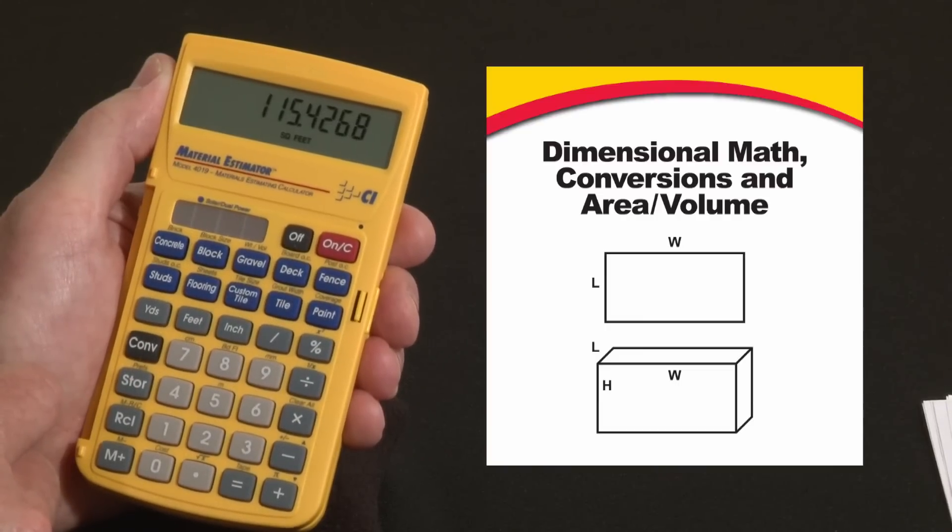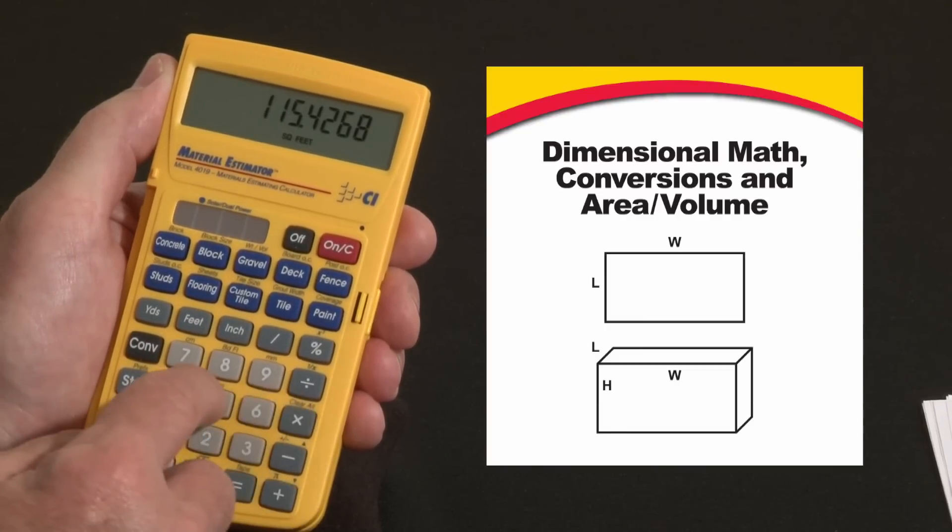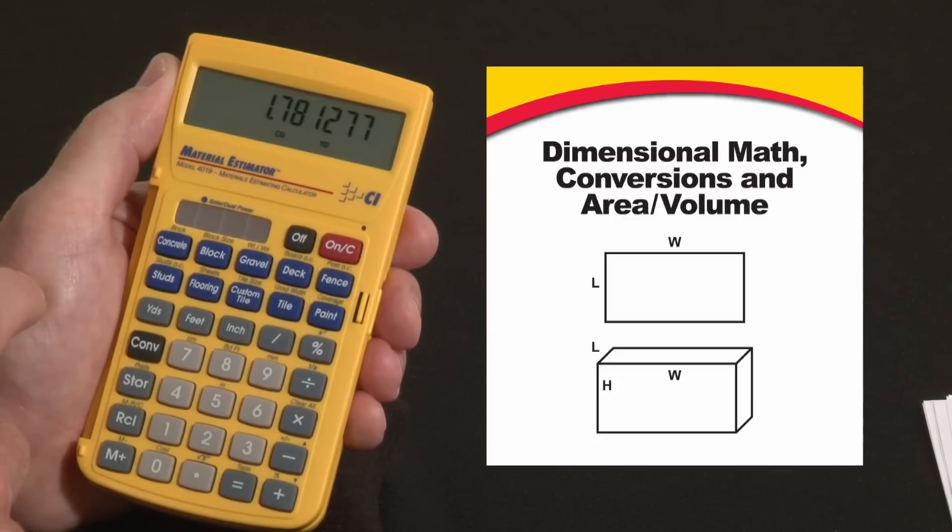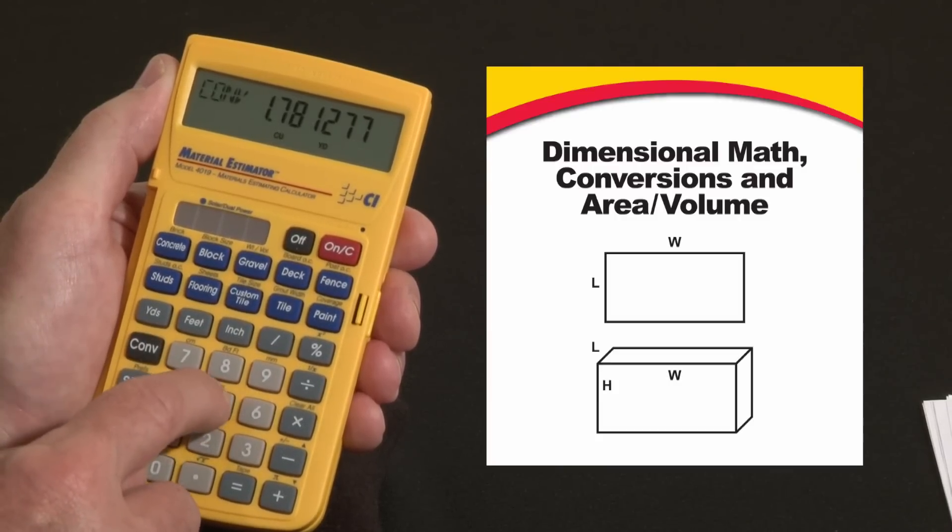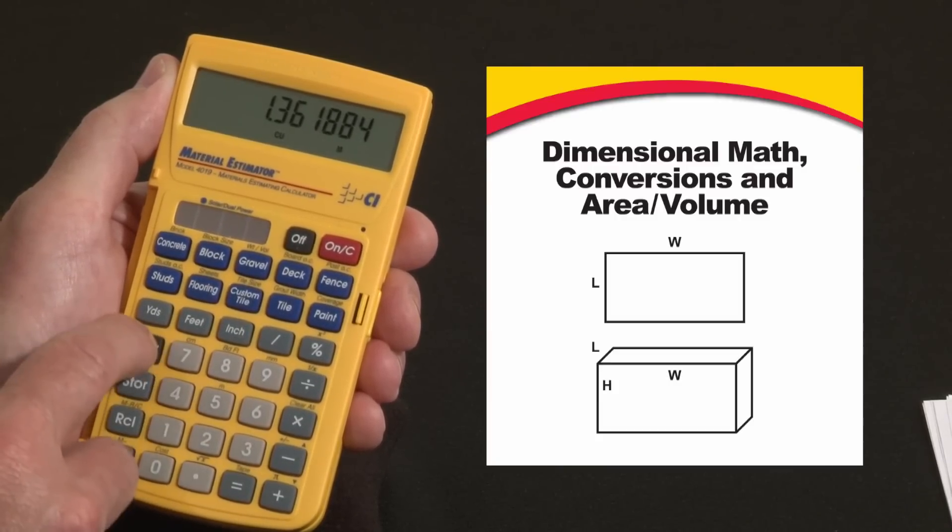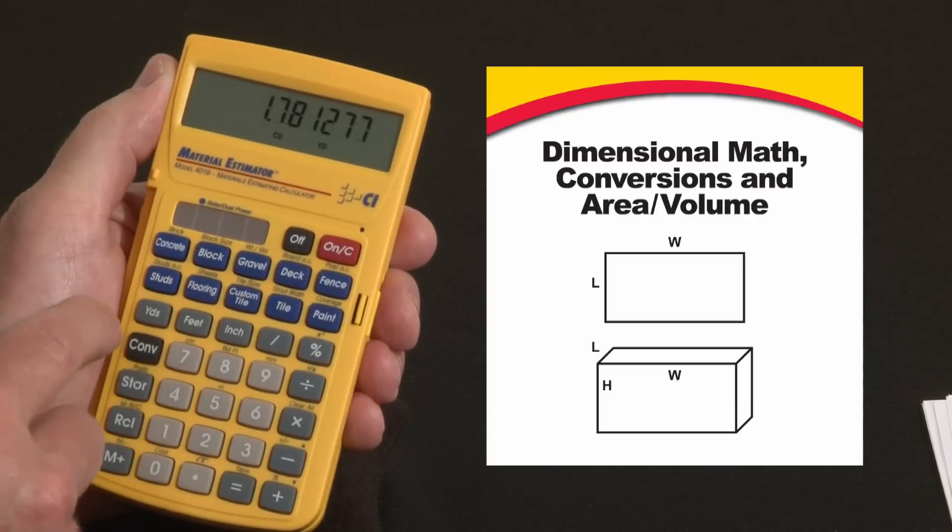If this were a pad, we would multiply it by the depth. Let's say times five inches thick. That would give us one point eight cubic yards. You could also convert that to cubic meters, right over the five here, if you had a need for that, or back to cubic feet or cubic yards.